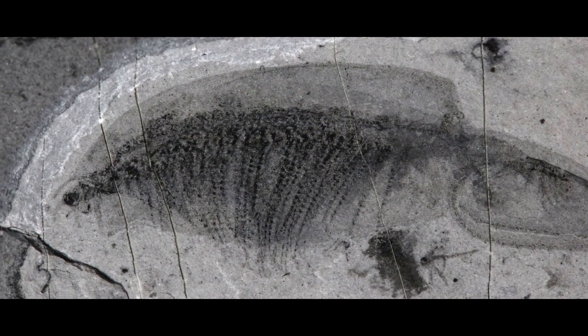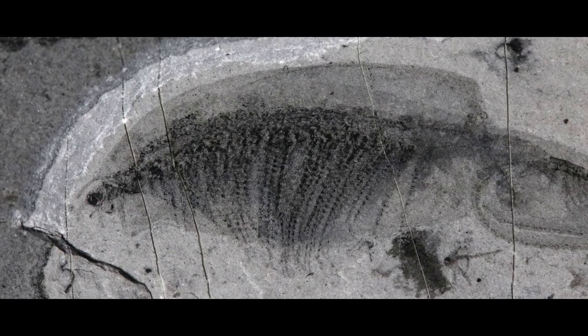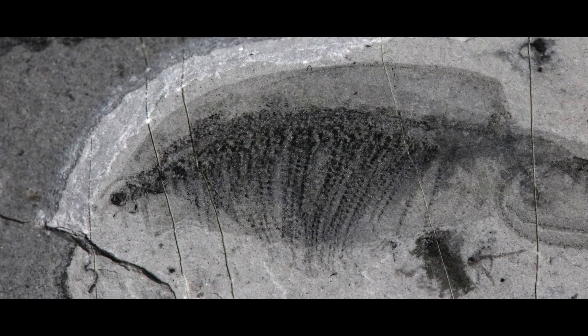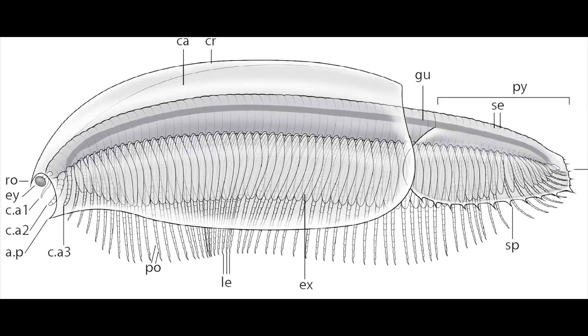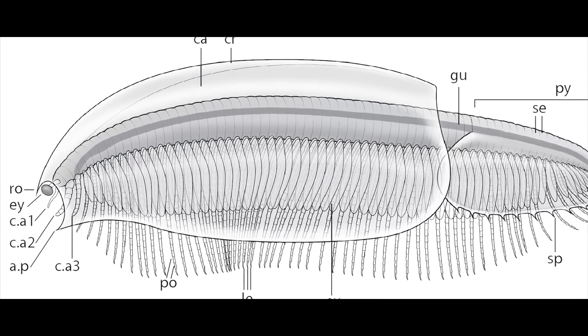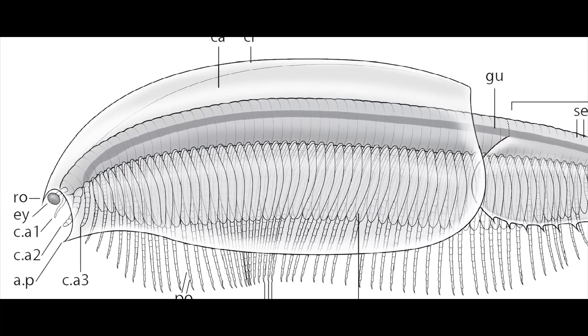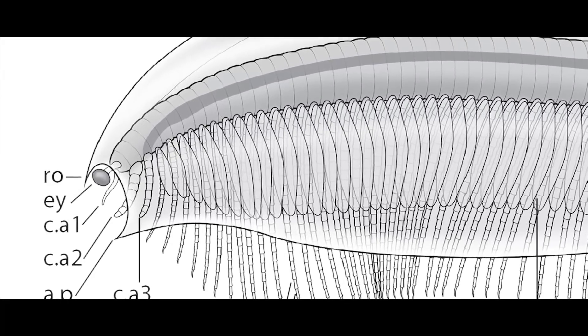The fossils show a small shrimp-like arthropod with a ton of segments and a ton of legs. There was a huge hardened shield that covered the first two-thirds of its body that were the eponymous bivalved shell.